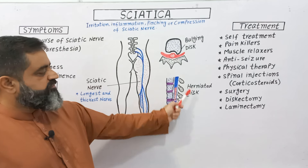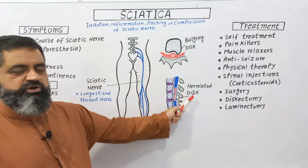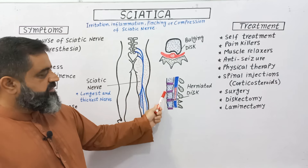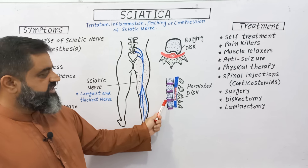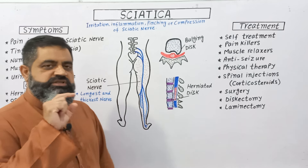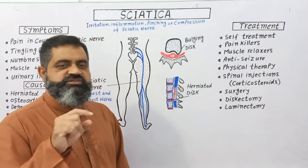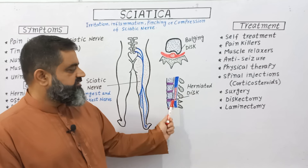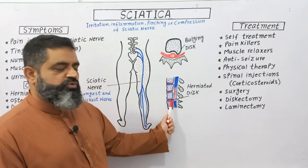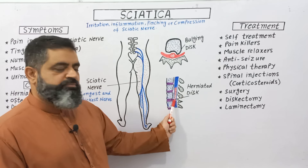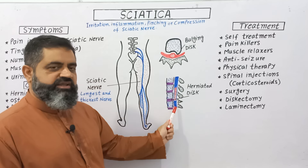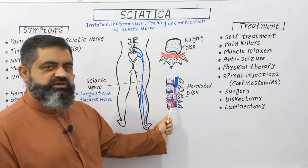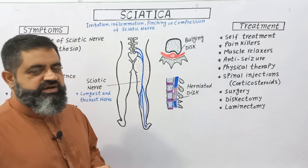In another diagram, looking at the bones of the vertebral column: this is one bone, this is another bone, and in between these two bones there is an intervertebral disc. Sometimes this disc slips out, which is known as a disc slip or herniated disc. When this disc slips out, it causes compression on the sciatic nerve, leading to severe pain and sciatica.